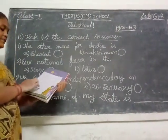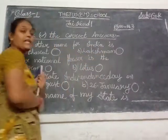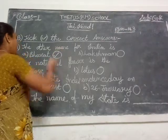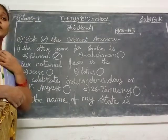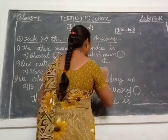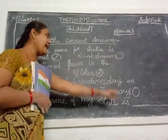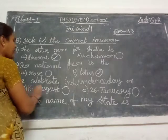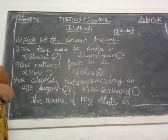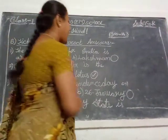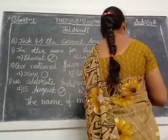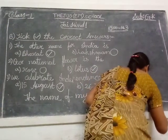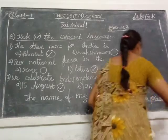See, children — the other name for India is what? Bharat. You know? So A option will be ticked. Next: Our national flower is — rose or lotus? Lotus. We celebrate Independence Day — in your school you celebrate Independence Day on 15th August, yes. A option. What is our state name? Our state name is Andhra Pradesh. Write Andhra Pradesh.